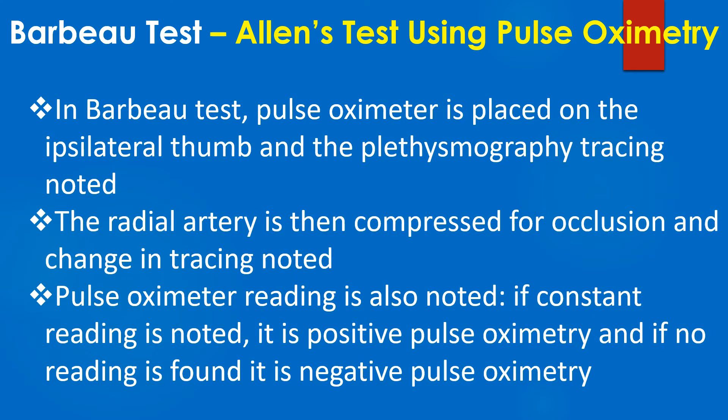In the Barbo test, a pulse oximeter is placed on the ipsilateral thumb and the plethysmography tracing is noted. The radial artery is then compressed for occlusion and the change in tracing is noted. The pulse oximeter reading is also noted. If a constant reading is observed, it is positive pulse oximetry; if no reading is found, it is negative pulse oximetry.